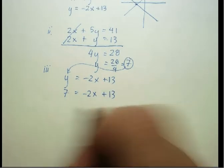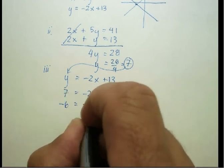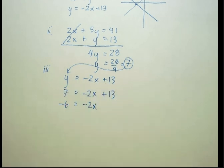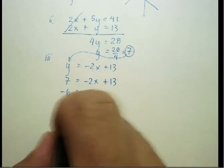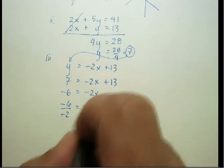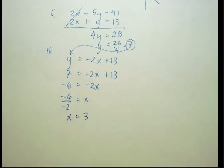Let's subtract 13 from both sides. I get negative 6 is equal to a negative 2x. Let's divide by a negative 2. I get negative 6 over negative 2 is x or x is equal to a positive 3.